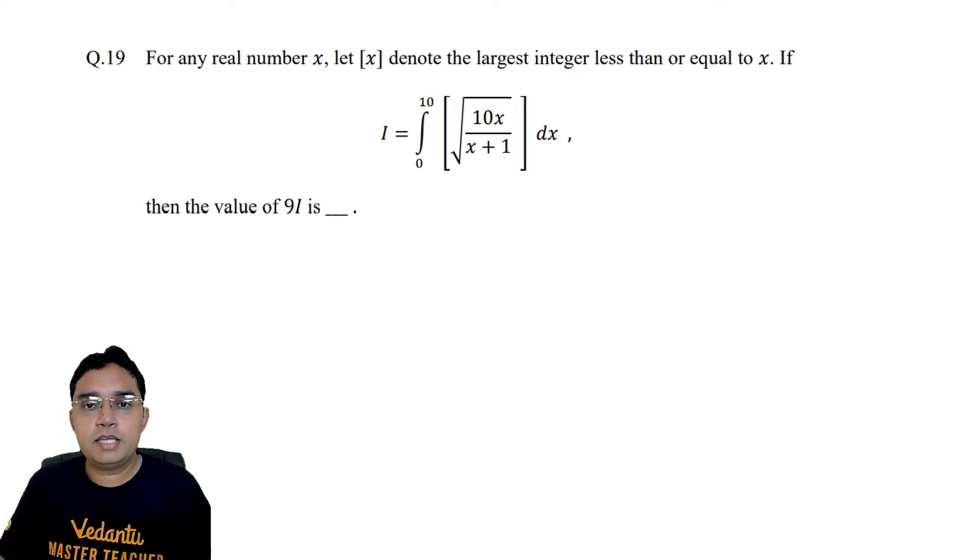Hello everyone, I am Surendra Jain, Master Teacher in Vedantu. We are discussing the paper of JEE Advanced 2021. This is question number 19 from Paper 2. For any real number x, bracket x denotes the largest integer less than or equal to x. If I is equal to integral from 0 to 10 of bracket square root of 10x/(x+1) dx, then the value of 9I is...